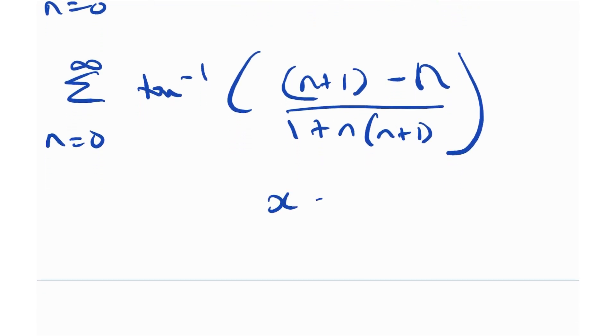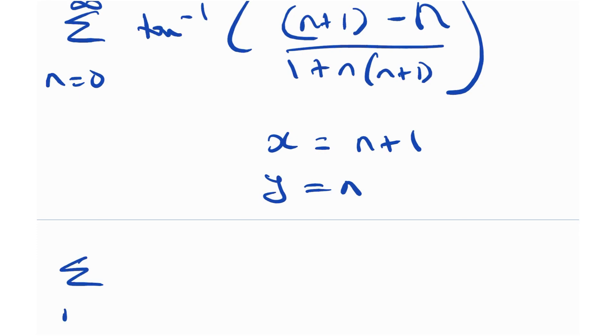Now, if I just use x as n plus 1 and y as n, do you actually notice something? This is effectively summation from n is equal to 0 to infinity of tan inverse of x minus y divided by 1 plus xy. If I just plug in x equal to n plus 1 and y is equal to n, I get something of this form.